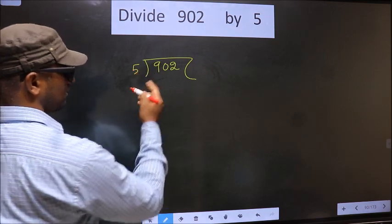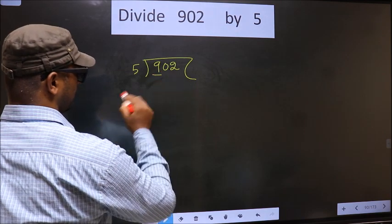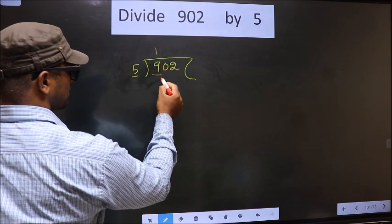5 here, okay. Next, now here we have 9. Our number close to 9 in the 5 table is 5 once 5.